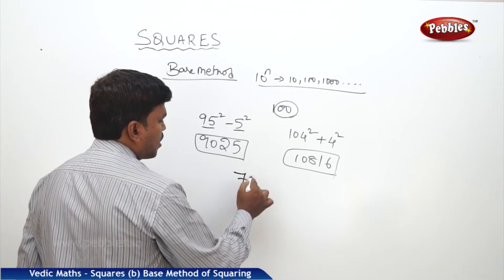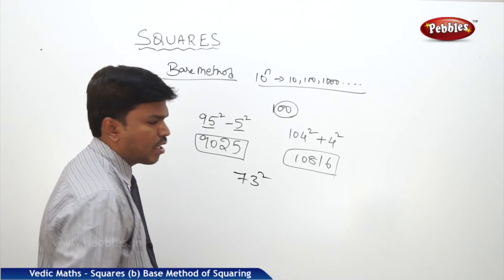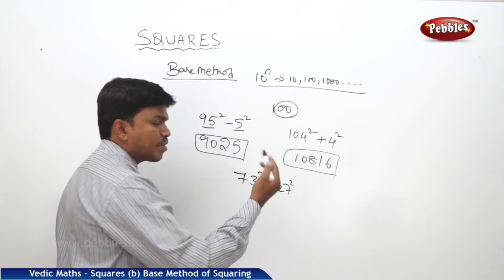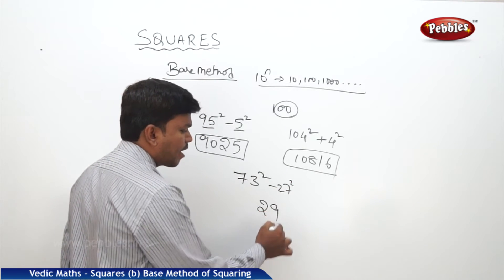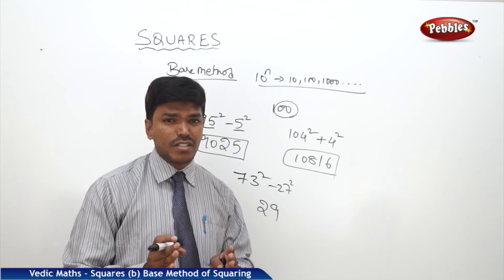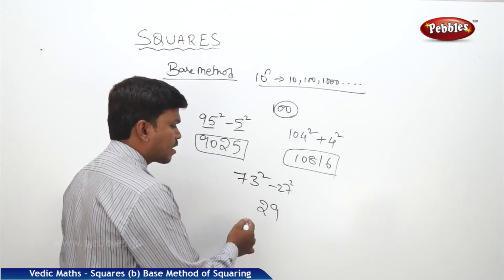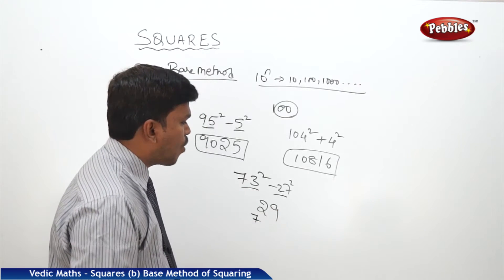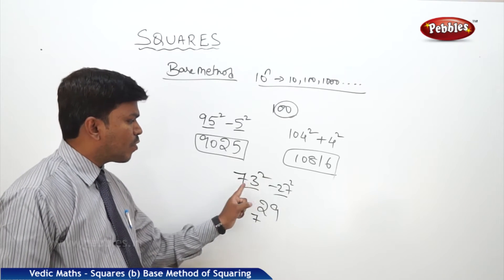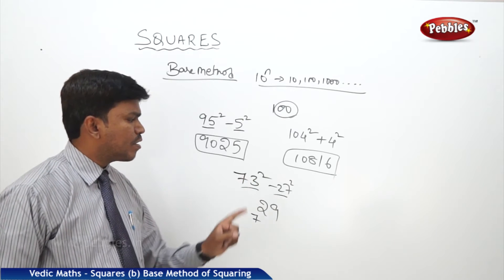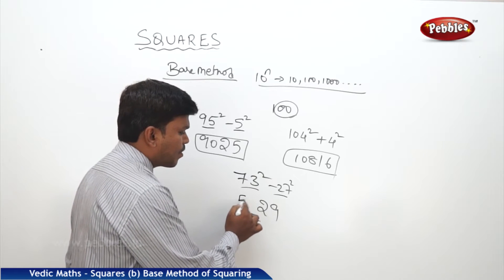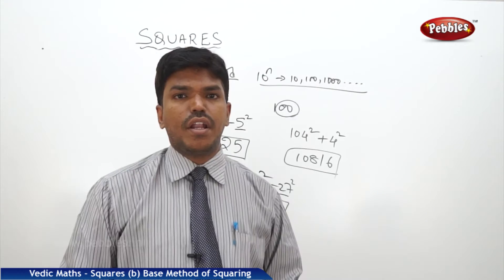One more example: I need 73 squared. Compare 73 with base 100 — it is less by 27. What is 27 squared? 729. Write 29 on the right, but 7 becomes the carry because the right side part should only be 2 digits. Now 73 minus 27 is 46, plus carry 7 is 53. So the answer is 5329.